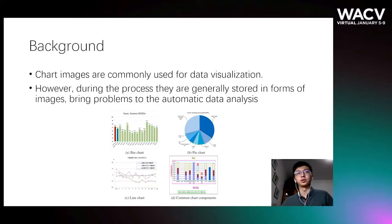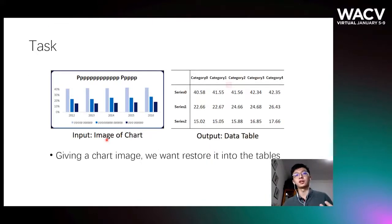I would like to introduce the background a little bit. Chart images are commonly used for data visualizations. However, during the process, they are generally stored in forms of images, which actually brings problems to automatic data analysis. Our task is quite simple. Given a chart image, we want to restore it into table format.